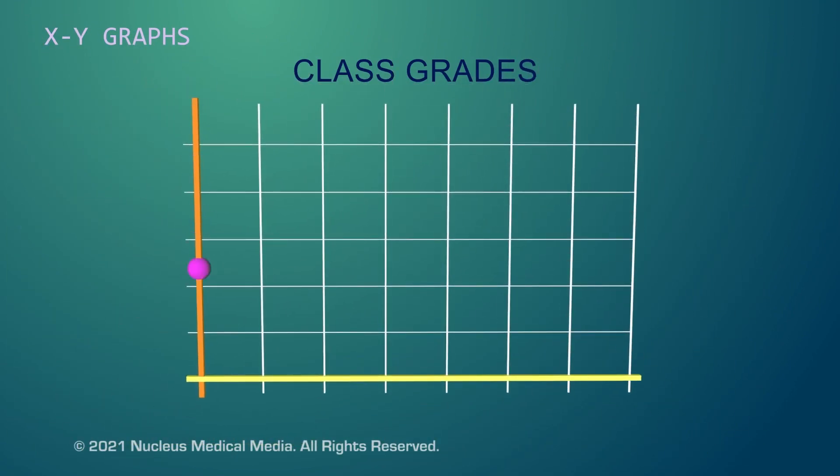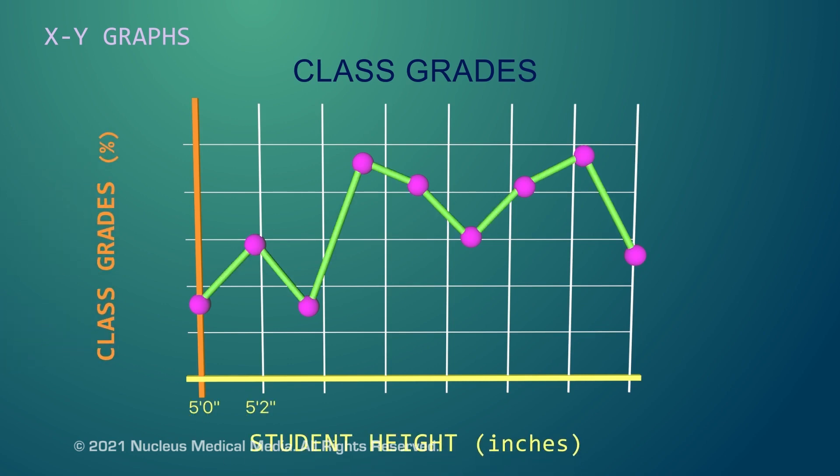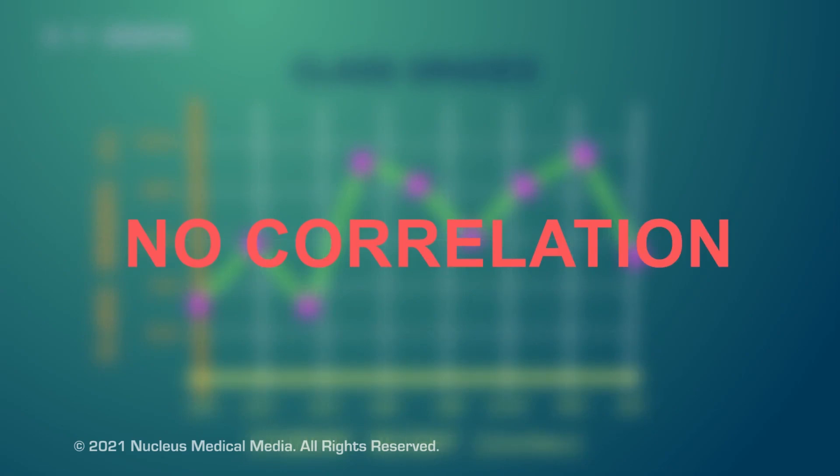In some cases, the variables might follow a random pattern and have no relationship. As an example, this graph plots student height with class grades. As you can see, these variables demonstrate no correlation.